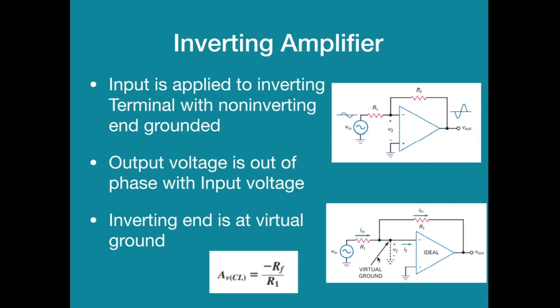The gain offered by the amplifier is minus RF upon R1. The minus sign indicates it is out of phase. So gain is dependent on the external components only. If you keep RF at 100K and R1 is 10K, the gain directly is 100 by 10 that is 10.